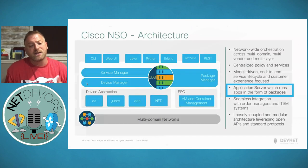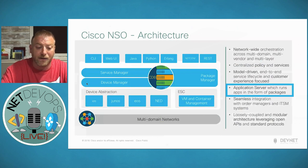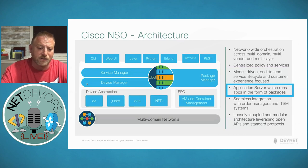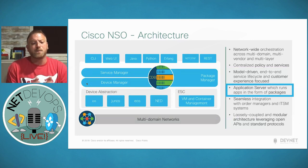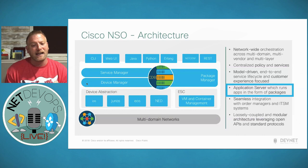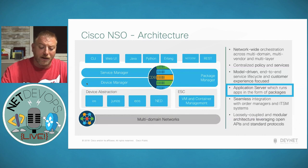From NSO's perspective, last season we talked about the southbound side — the abstracted device layer provided through what's called a Network Element Driver, or NED. This gives us a multi-domain, multi-vendor, model-driven network end-to-end where we can centralize policy and services in the configuration database. For this session, we're going to look at what we're exposing on the northbound side in the form of the service management layer and package manager. NSO is an application server, and we extend its functionality through packages.